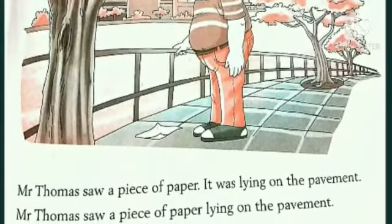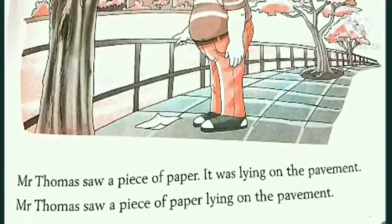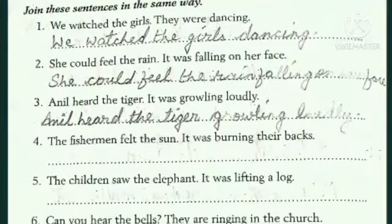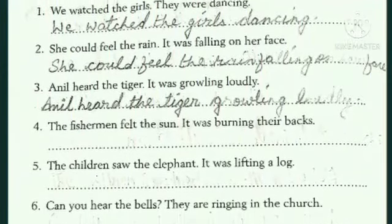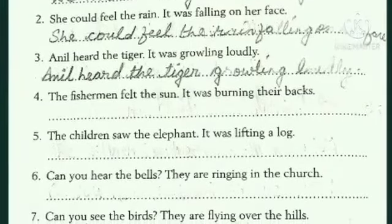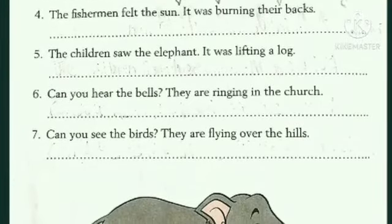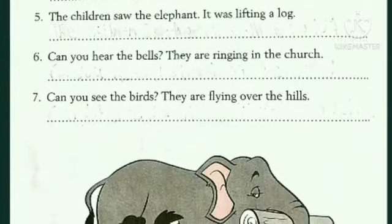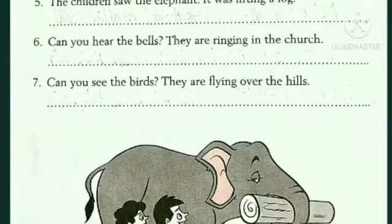So it becomes: 'Mr. Thomas saw a piece of paper lying on the pavement.' Now join these sentences in the same way. 'We watched the girls. They were dancing.' becomes 'We watched the girls dancing.' Next: 'She could feel the rain. It was falling on her face.' becomes 'She could feel the rain falling on her face.'